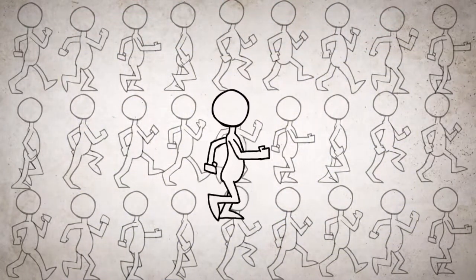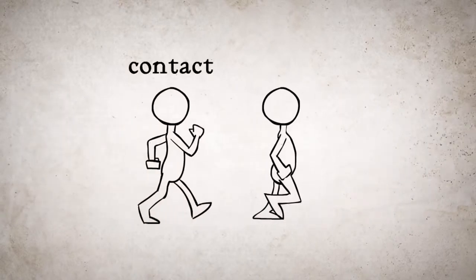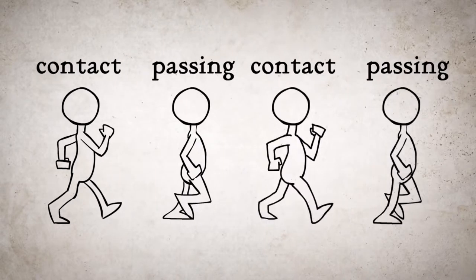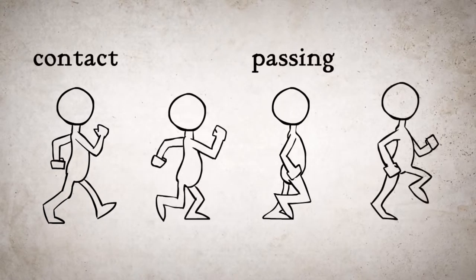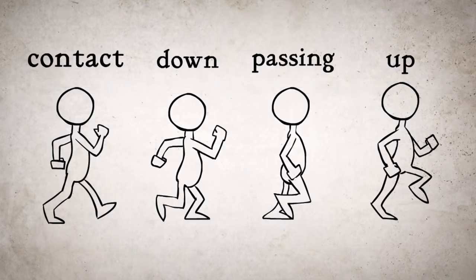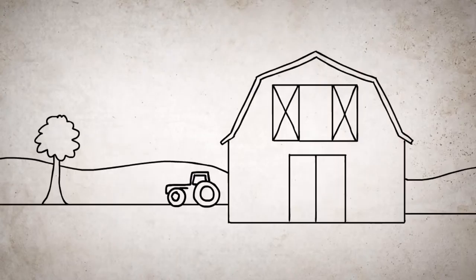Another type of animation is limited animation, and it is a really simple concept — it's where the animator just reuses an already existing bit of animation. For example, why animate a person taking each step when you can animate the first few, then repeat those already done and simply move the background, creating the illusion that you animated each step of the character? This process saves time and money, as you don't have to animate 400 frames; instead you animate 50 and repeat the same animation 8 times, meaning animators don't have to work as long, making it cheaper.